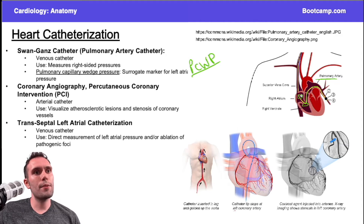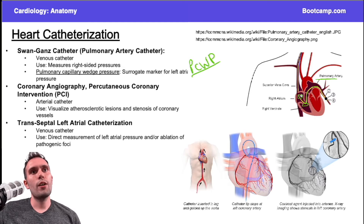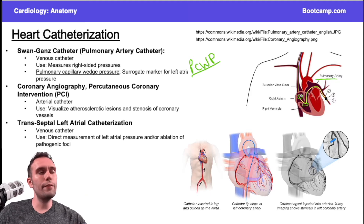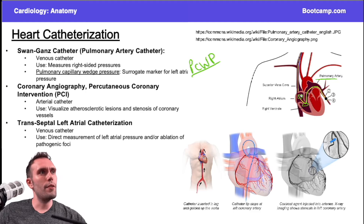The catheter tip stops at the left coronary artery, and then dye is injected so you can visualize the vessels. If there's an area where you lose contrast, that can indicate an occlusion or stenosis. This technique is used specifically for patients with concern for myocardial infarction or ST elevation.